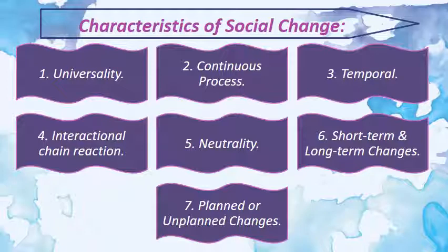5. Neutrality: Social change is a neutral term — it has no value judgement. As a process it is categorical, meaning it is neither moral nor immoral but amoral, and thus ethically neutral. One can study social change without being for or against the change. Social change may be progressive or regressive, permanent or temporary, planned or unplanned, beneficial or harmful. Social change may be swift and radical, such as the French Revolution, or it may be slow and gradual, such as changes in traditions and customs. Thus social change is an objective term.